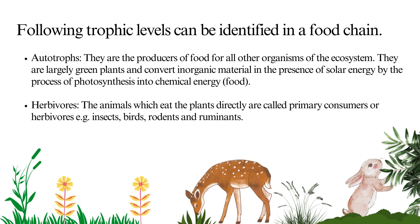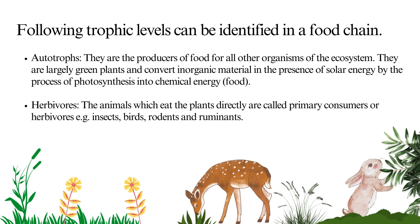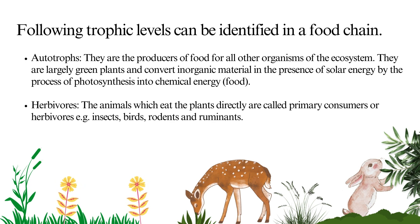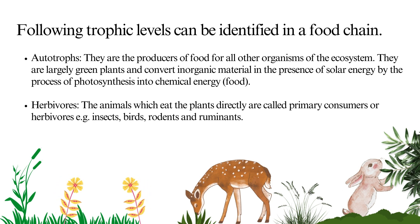Following trophic levels can be identified in a food chain. Autotrophs: they are the producers of food for all other organisms of the ecosystem. They are largely green plants and convert inorganic material in the presence of solar energy by the process of photosynthesis into chemical energy. Herbivores: the animals which eat the plants directly are called primary consumers or herbivores — for example, insects, birds, rodents, and